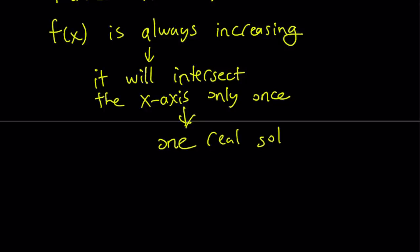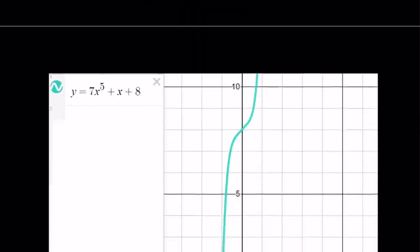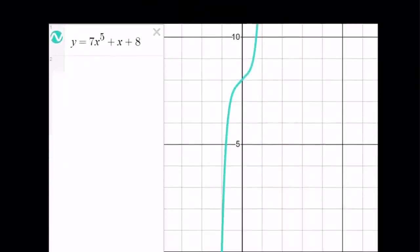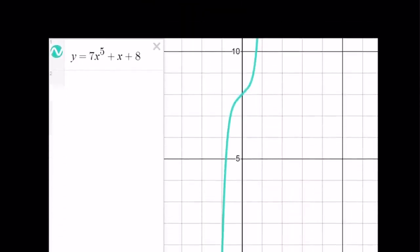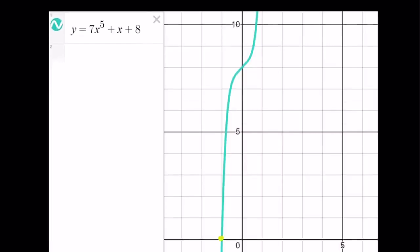That means there's only going to be one real solution. And I'll show you the graph of it, so you'll see what it looks like. Here's our function: 7x to the 5th power plus x plus 8. And as you can see here, we only got one solution, and that will be x equals negative 1.